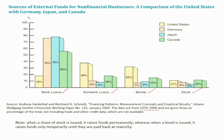What are the main inferences here? For the US, non-bank loans occupy a larger share. But for Germany, Japan, and Canada, bank loans occupy a larger share.